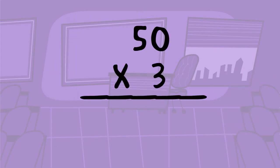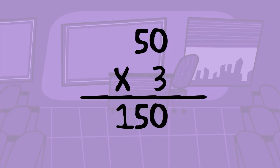Another way to think about it is by setting up standard algorithm. Let's look at our base fact, 3 times 5. We know 3 times 5 equals 15. But we are multiplying 5 tens instead of 5 ones. So we must add a 0 to represent our ones place value.